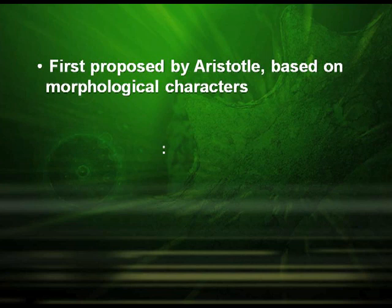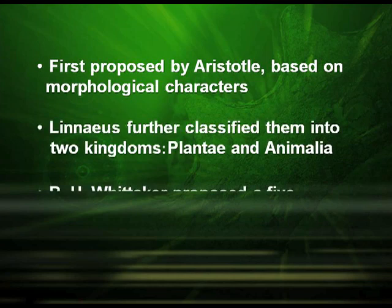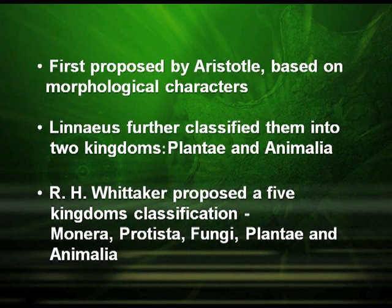It was first proposed by Aristotle based on morphological characters. Linnaeus further classified them into two kingdoms: Plantae and Animalia. R.H. Whittaker proposed a five kingdom classification: Monera, Protista, Fungi, Plantae, and Animalia. We will be discussing these kingdoms one by one.